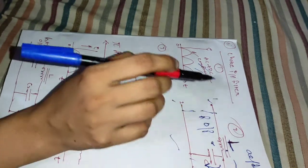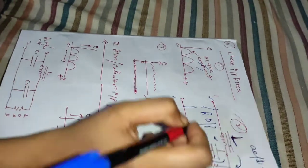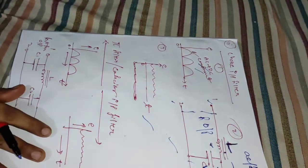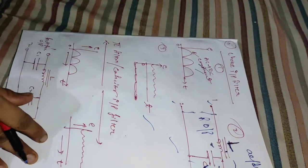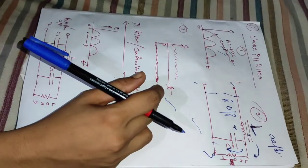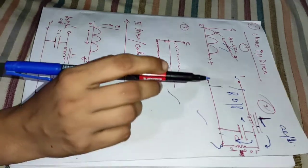This results in reduced ripple at terminal three. The output of the choke input filter at terminal three contains the DC component and remaining part of the AC component which has managed to pass through the choke.